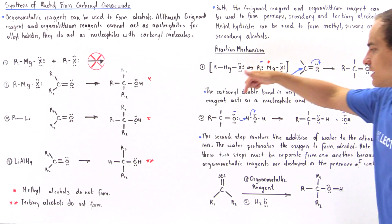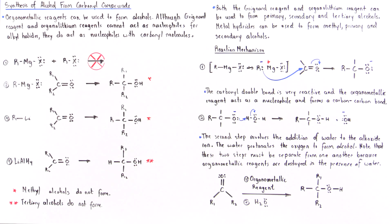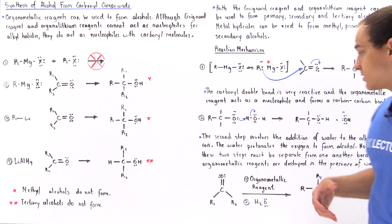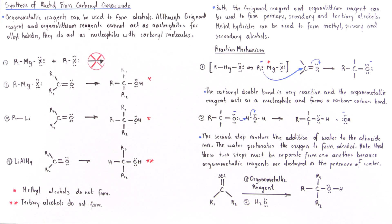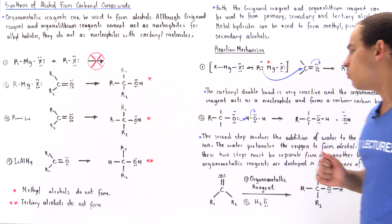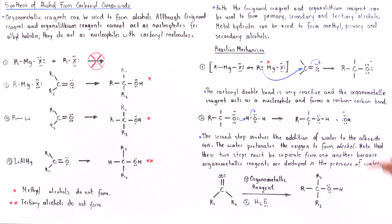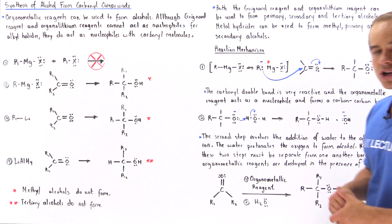And so, the water now reacts with this alkoxide to form our alcohol product. So once again, the second step involves the addition of water to the alkoxide ion and the water protonates the oxygen on the alkoxide to form our alcohol. Now note that these two steps must be separate from one another because organometallic reagents are destroyed in the presence of water.